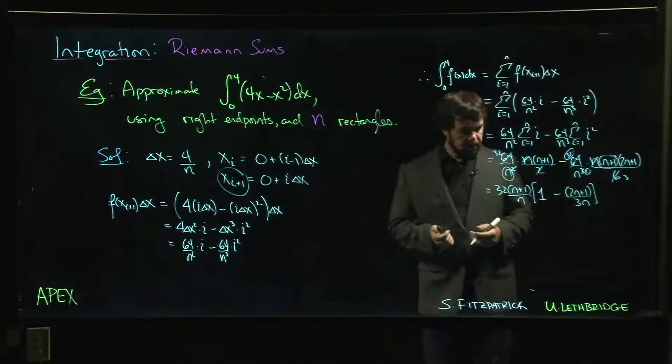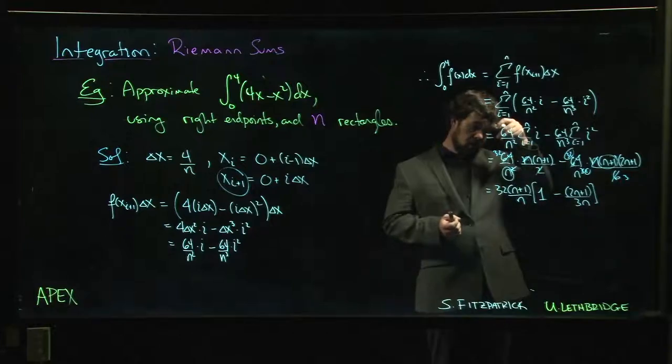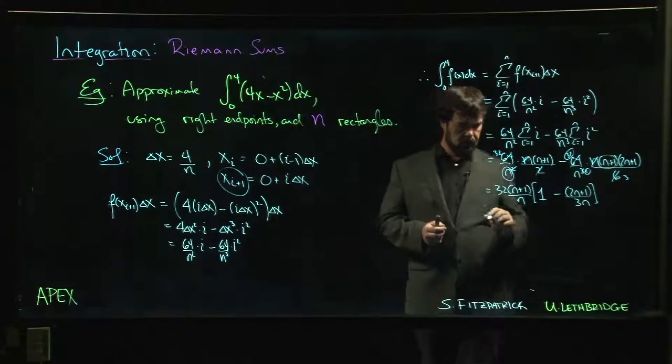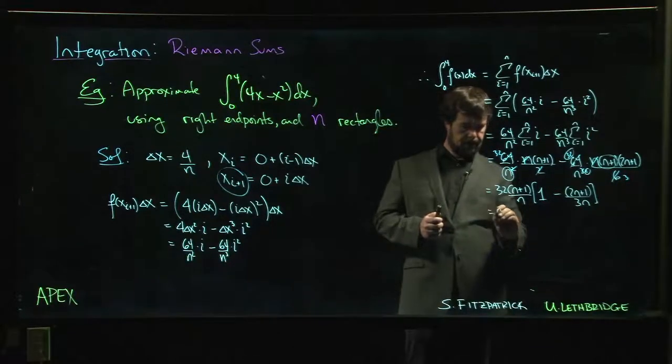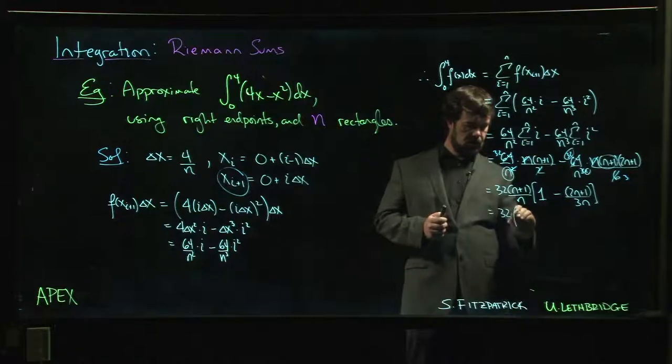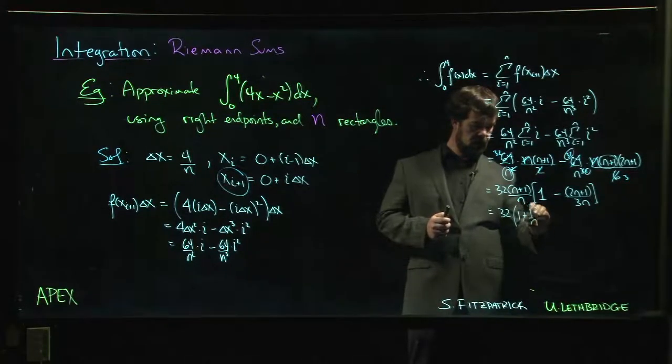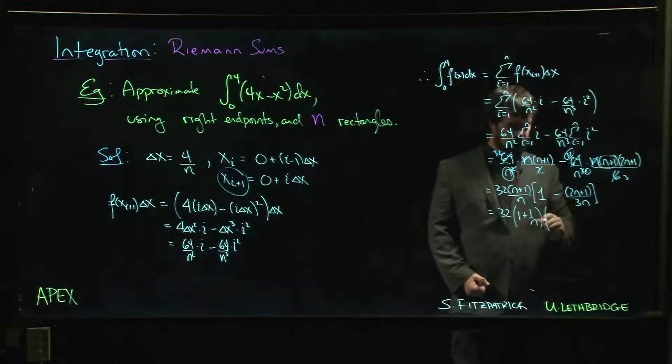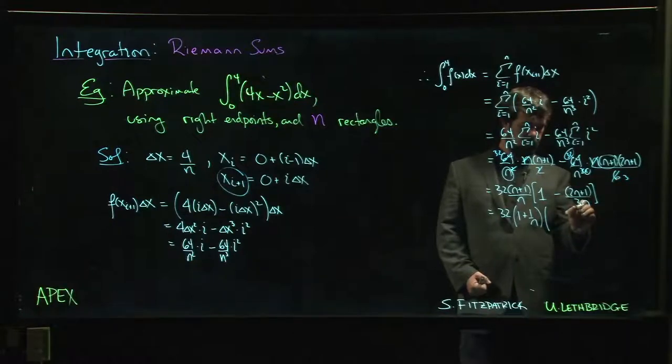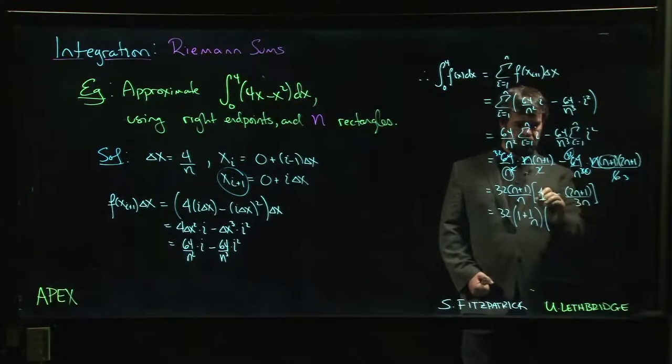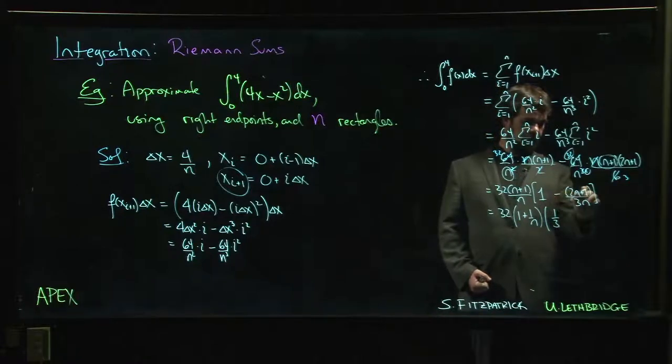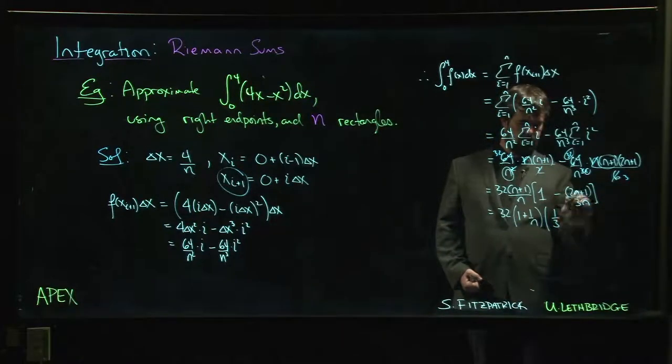Not so bad. And you could try to simplify a little bit if you want. Let's try to clean this up. We could do this as 32 times 1 plus 1 over n. And in here, if we try to clean this up, 2n over 3n is just 2 over 3. So 1 minus 2 thirds is 1 third. And then there's still a 1 over 3n that's left.